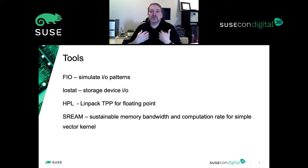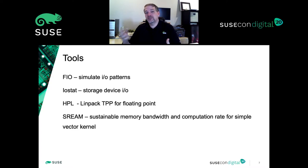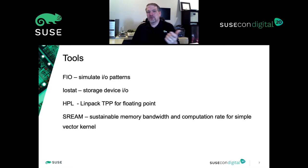From an HPC cluster perspective, HPL does the LINPACK TPP for floating point. STREAM measures sustainable memory bandwidth — an important measure of how much bandwidth per CPU we can realize in a given system and how tuning affects it. There are also many other tools: vmstat, IOTOP, IFTOP, Numatop, and cpupower — all useful during investigations.